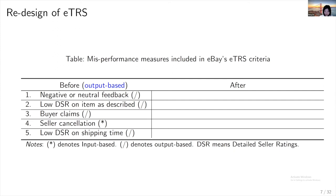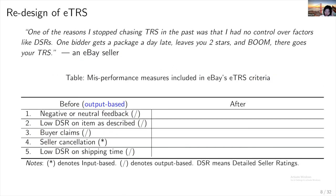Sellers could be discouraged because they were exposed to a great deal of risk and uncertainty due to the nature of consumer reports. This is best summarized by a quote from an eBay seller: "One of the reasons I stopped chasing top rated seller status in the past was that I had no control over factors like detailed seller ratings. One bidder gets a package a day late, leaves you two stars and boom, there goes your top rated seller status." Realizing this was a problem, in 2015 eBay announced a change in ETRS requirements.